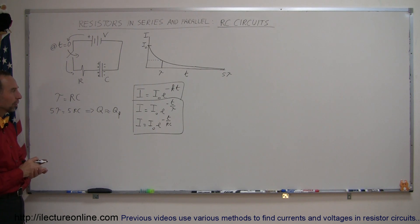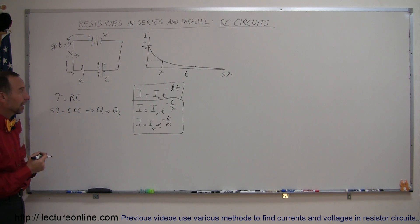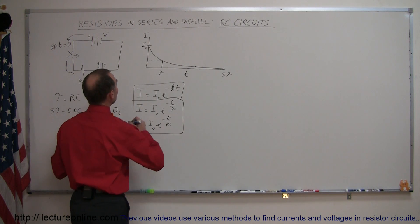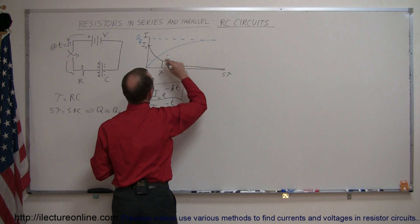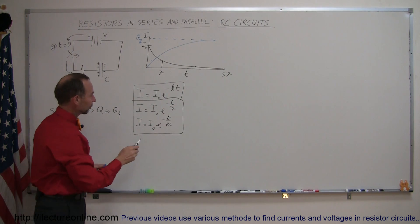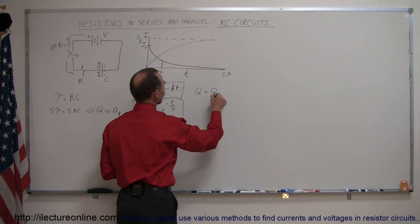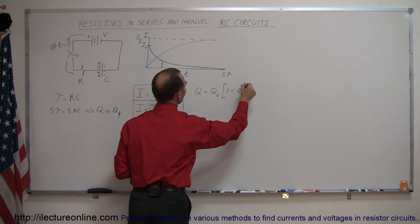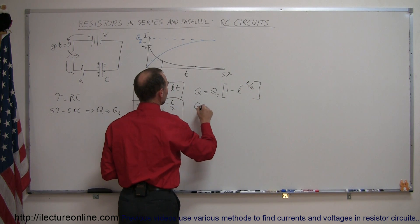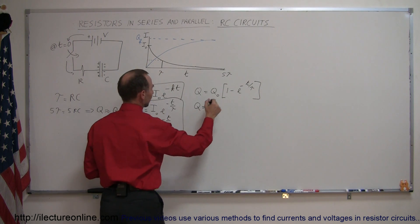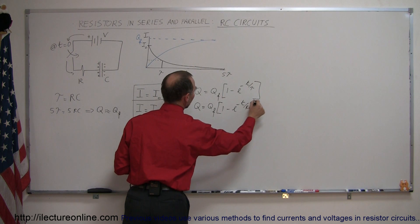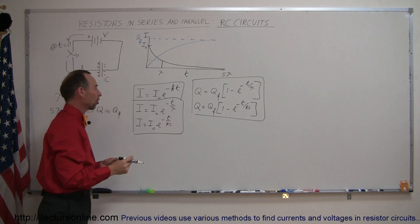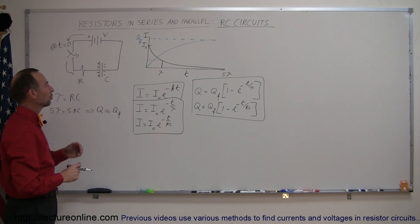Based upon that information, we're able to figure out what the current is in the circuit at any point in time. We're also able to figure out what the charge is on the capacitor at any point in time, because the charge increases in an inverse fashion — eventually building up to a maximum charge q-final. So we can say q equals q-final times the quantity 1 minus e to the minus t over tau, or q equals q-final times 1 minus e to the minus t over RC.